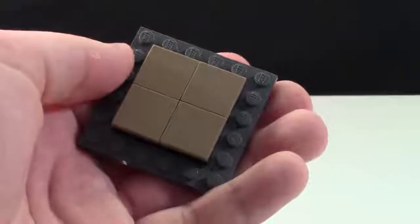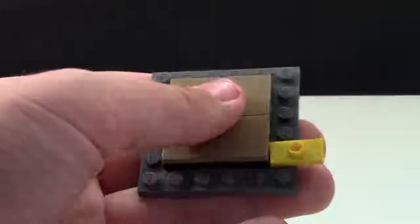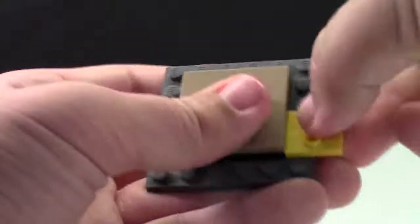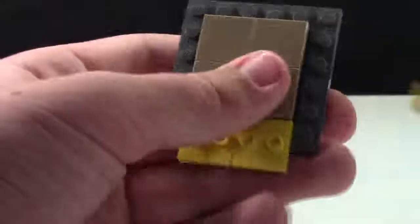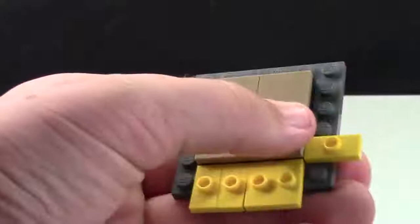Once your 4x4 plate is all covered with these tiles, you're going to take your 16 1x2 jumper plates and you're going to add them to the side of it. You're going to want to put four on each side leaving one stud on the end of each one, and you're just going to continue doing this along the entire piece here.